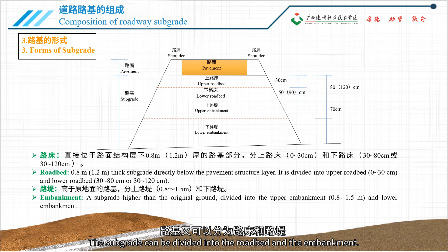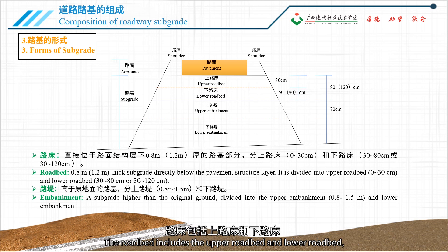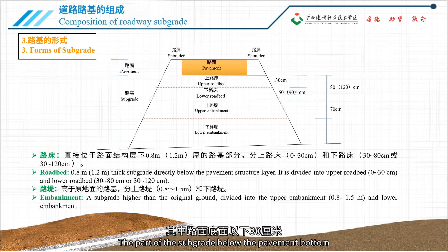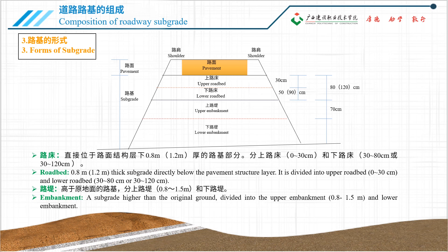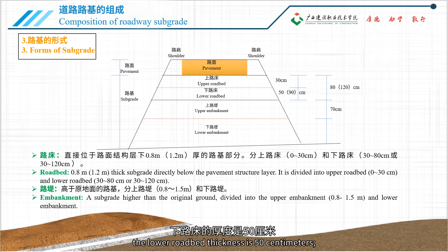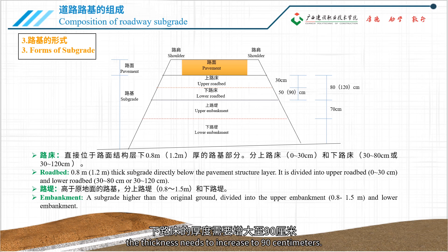The subgrade can be divided into the roadbed and the embankment. The roadbed includes the upper roadbed and lower roadbed, while the embankment includes the upper and lower embankments. The part of the subgrade below the pavement bottom by 30 centimeters is the upper roadbed. The thickness of the lower roadbed varies with traffic volume. For light, medium, and heavy traffic highways, the lower roadbed thickness is 50 centimeters. For very heavy and extremely heavy traffic highways, the thickness needs to increase to 90 centimeters.